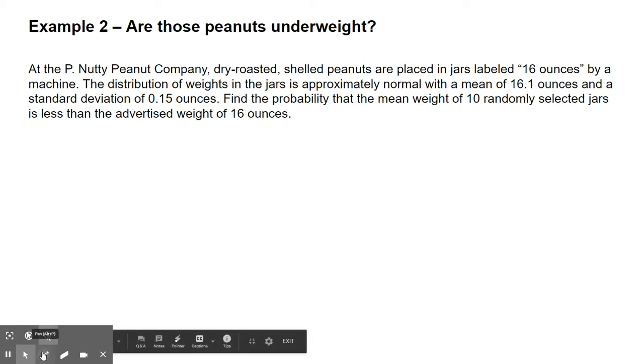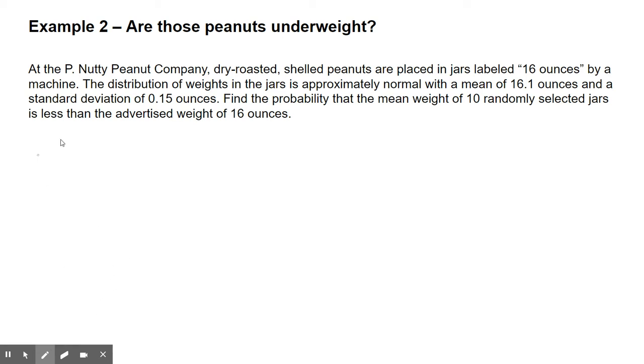We need to build our normal distribution. First, let's find our population values. The mean of the population is 16.1 ounces, and the population standard deviation is 0.15 ounces. The sample size we're looking at is 10. So the mean of our sampling distribution for x-bar equals the mean of the population, 16.1 ounces. Make sure you label.